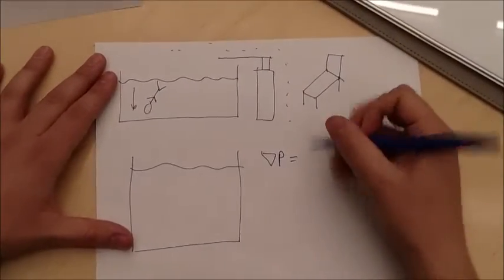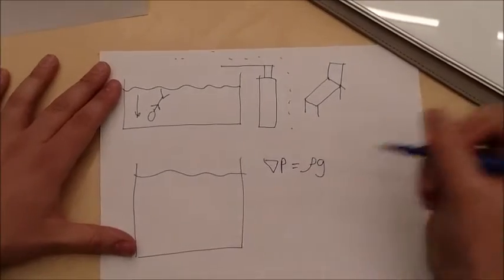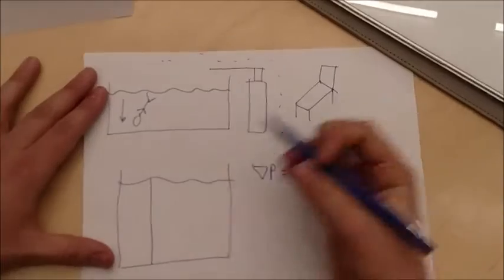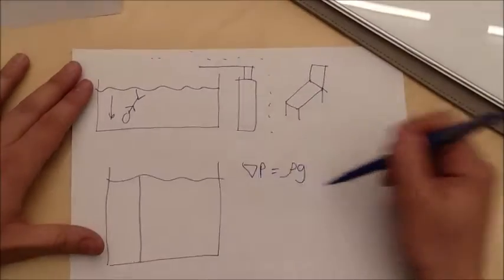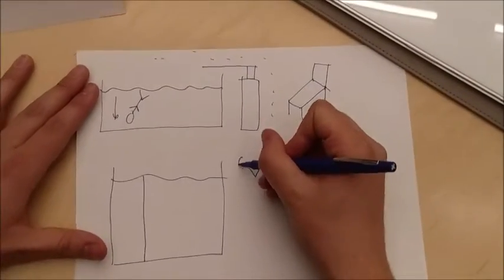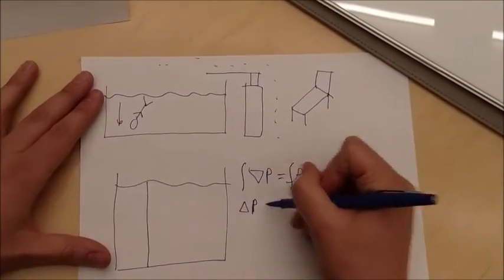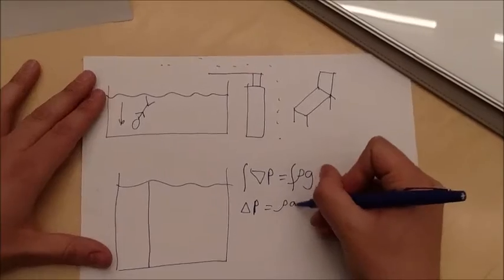We're going to use the fundamental theorem of hydrostatics here, which is del p equal to rho g, where rho is the density of the fluid and g is the universal gravity constant. If we integrate both sides of this equation, we can get another equation that relates the change in pressure to the change in depth of the fluid. So delta p equals rho g delta z.